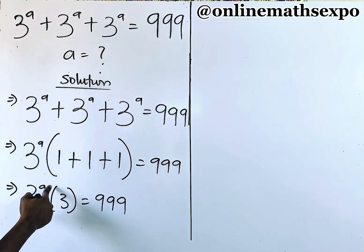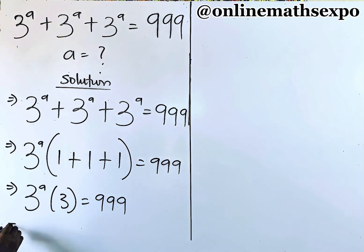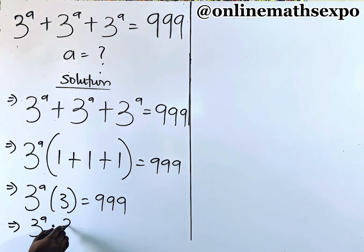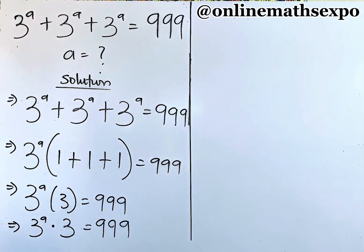Now remember that this is multiplication. So it's the same as 3 to the power of a multiplied by 3, is equal to 999.